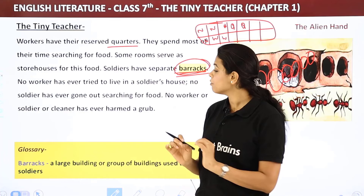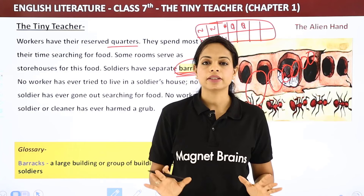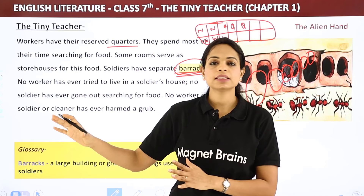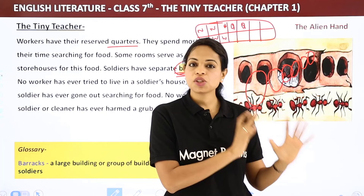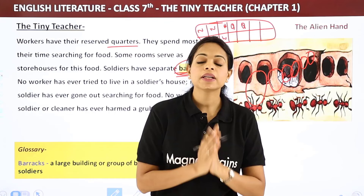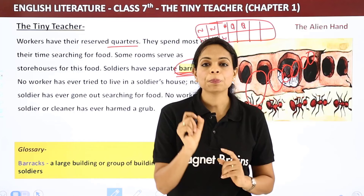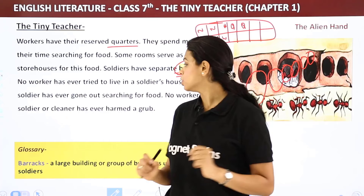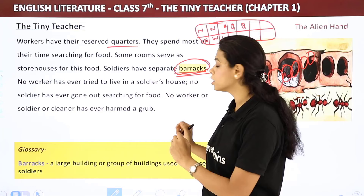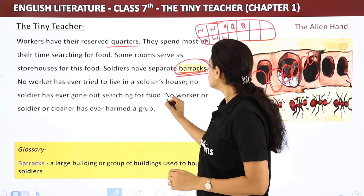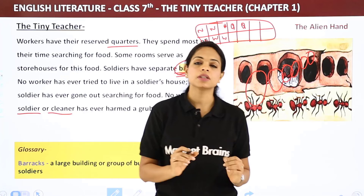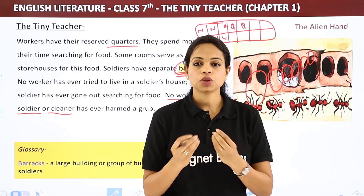There are strict rules: no worker has ever tried to live in a soldier's house, and no soldier has ever gone out searching for food. The queen ant will not search for food or do cleaning. Workers will not protect — their job is only to search for food. Soldiers protect. No worker, soldier, or cleaner has ever tried to harm a grub.